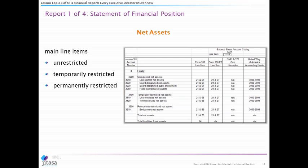Net assets — again, in the for-profit world it's called equity. It's whatever's left when you take your assets and subtract your liabilities. In the nonprofit world, you want to break that down into unrestricted, temporarily restricted, and permanently restricted. Permanently restricted typically means an endowment. Temporarily restricted means the funds must be used at a specific time or for a specific purpose — typically foundation or government grants. Unrestricted is that money that comes with no strings attached, which every nonprofit is looking for.